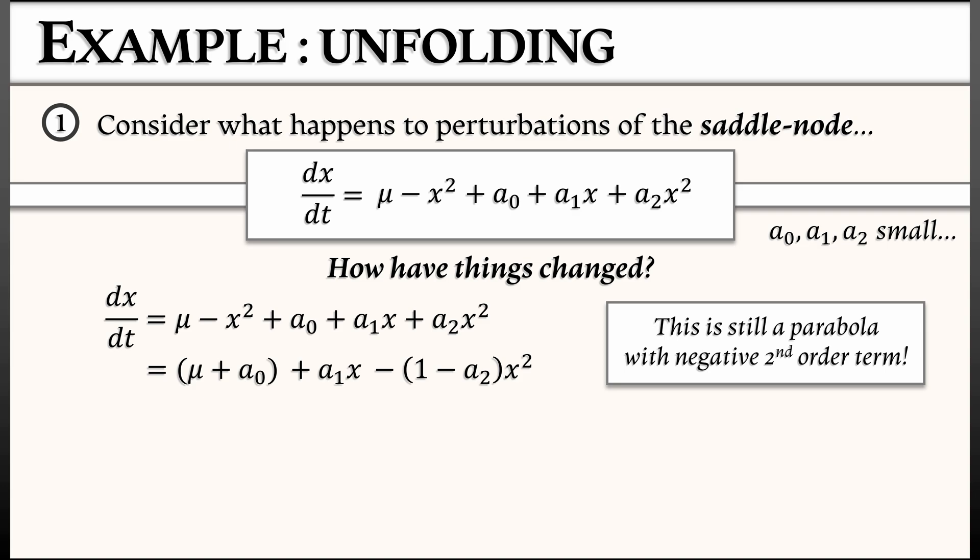In fact, if I do a little bit of fancy factoring, some completing the square type stuff, then what I get is in the form of a saddle node bifurcation. But instead of happening at μ equals zero, it's happening away a little bit. Negative a₁² over 4 times quantity (1 - a₂) + a₀. And it's not happening at x equals zero. It's happening at x equals a₁ over 2 times quantity (1 - a₂). Whatever. Those terms don't matter.